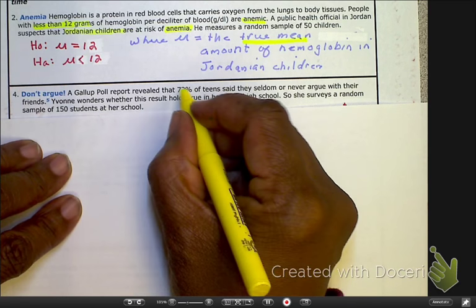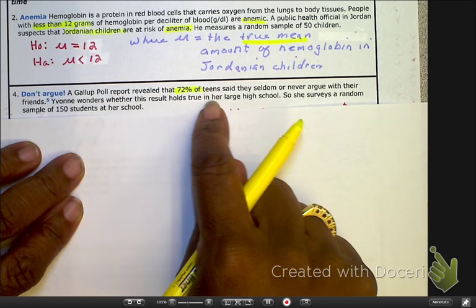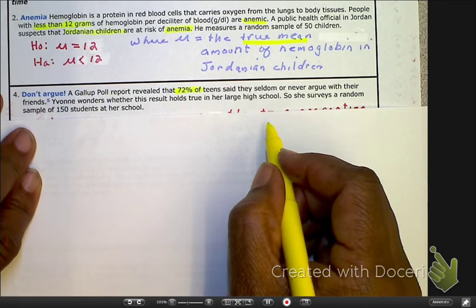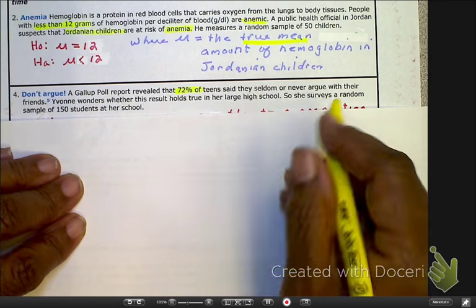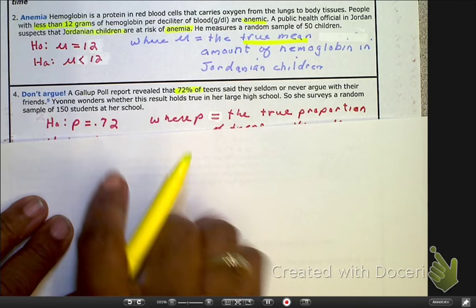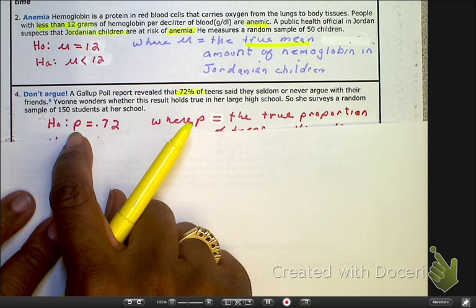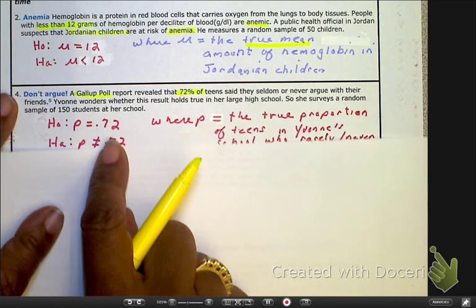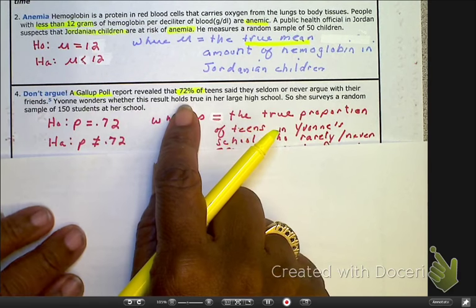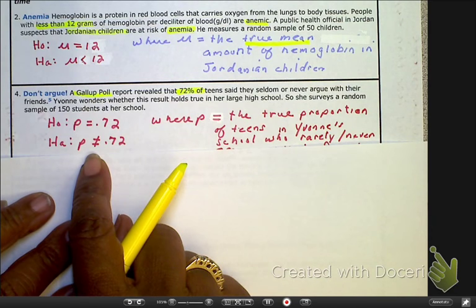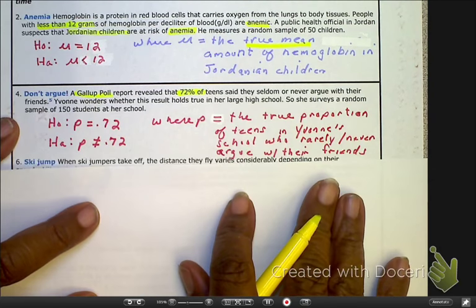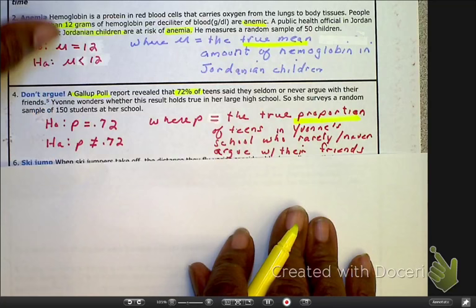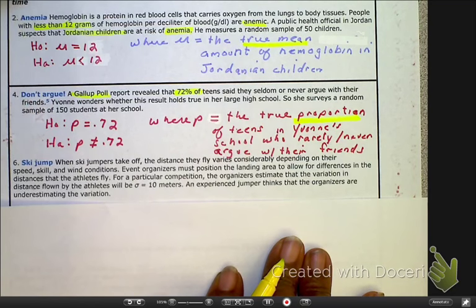As you read it, I see a proportion coming. So, the Gallup poll reports that 72% of the teens said they seldom or never argue with their friends. So, we've got Yvonne that wonders if these results hold true. She surveyed 150 kids at the school. So, let's look at our H0. Here, remember, no hats, no hats. So, this is your population percentage because that is what the Gallup poll says. So, that's the big picture. That's your parameter of 72. Here, please notice, she's not saying it's less than. She's not saying it's greater than. She's just saying, I just think it's different. I just don't think it's 72. And please notice how we define the P. It's the true proportion of teens in Yvonne's school who rarely or never argue with their friends.